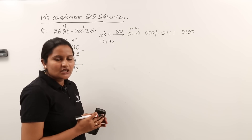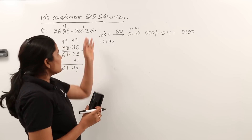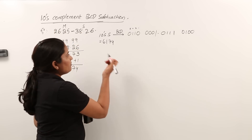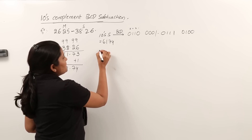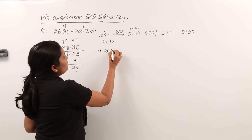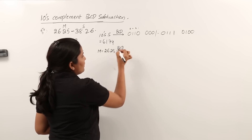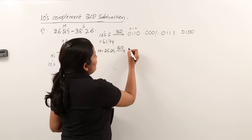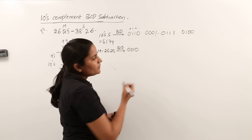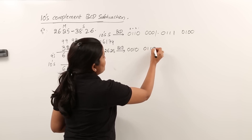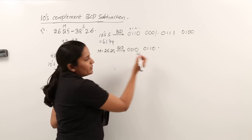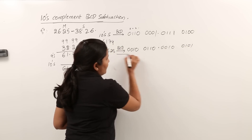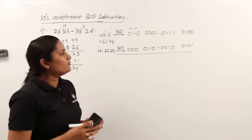In any complement subtraction process, the second step is to add the ten's complement of the subtrahend to the minuend. Our minuend is 26.25, which we now express in BCD code. For 2: 0010. For 6: 0110. For 2: 0010. For 5: 0101. Whenever in doubt, take reference from the 8-4-2-1 table for each digit.